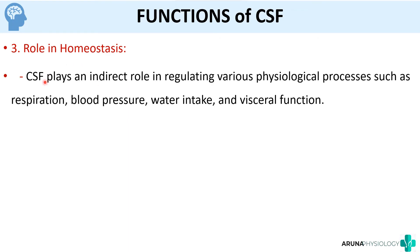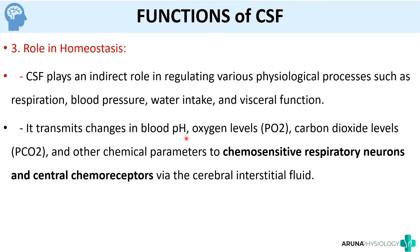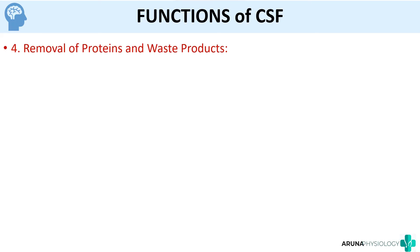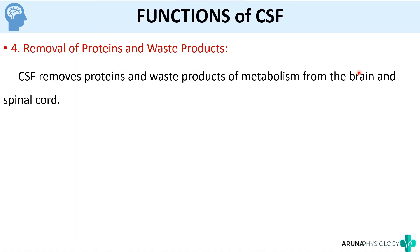CSF also has a role in homeostasis by regulating various physiological processes such as respiration, blood pressure, water intake, and visceral function. Through chemosensitive respiratory neurons and central chemoreceptors, CSF helps maintain constant levels of blood pH, PO2, and PCO2. Finally, CSF has an important role in the removal of proteins and waste products from the metabolism of the brain and spinal cord.